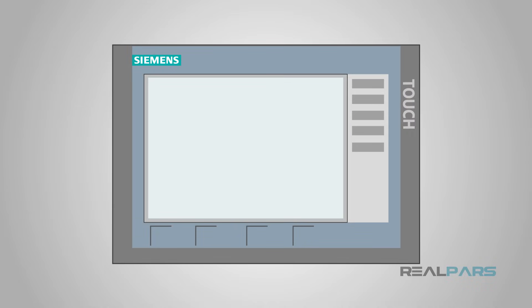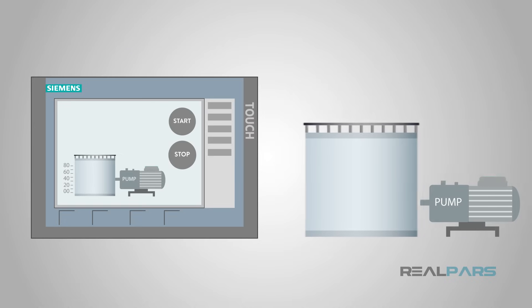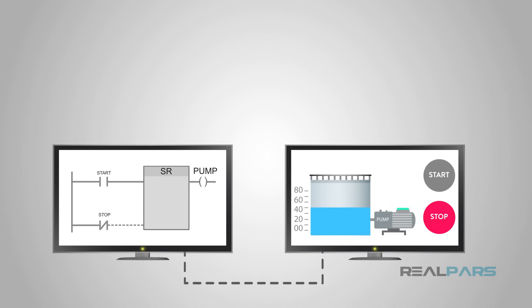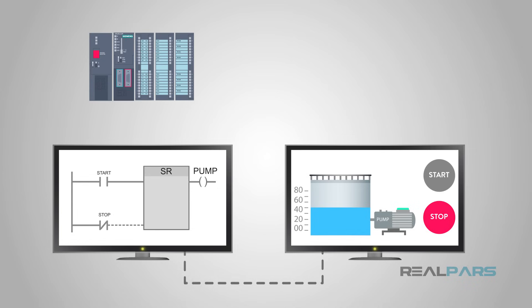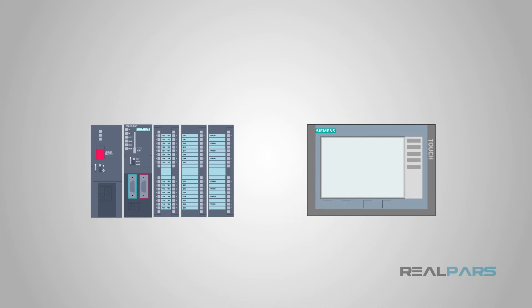For example, an HMI may have a large tank displayed on the screen with the level of a liquid displayed. Next to the tank is a pump to lower the liquid level. An HMI can also have the start and stop button displayed and usable on the screen next to the pump. This display would be able to actually turn the pump on and off. But it's not as easy as just placing a button or a tank on the screen — the person programming the HMI has to program each indicator and button to a specific input or output address of a PLC.